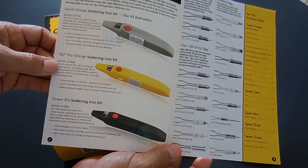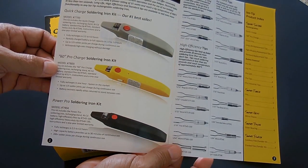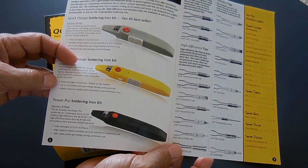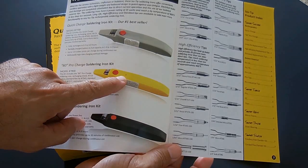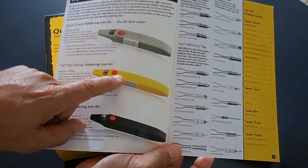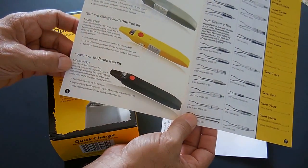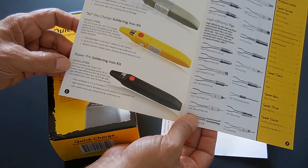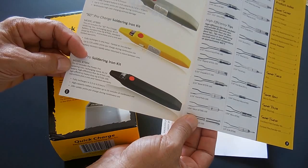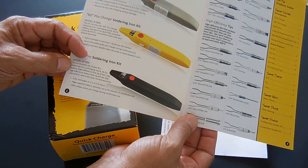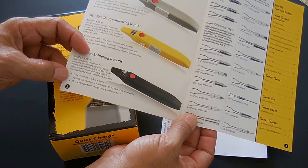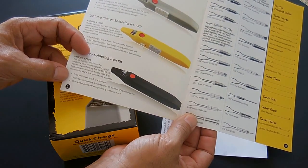The next one here is the model 7800. The only difference is this one charges faster. It charges in one hour, and it also includes this little indicator to let you know that the electronic soldering iron is charging. And the last one at the bottom is the Power Pro, and that one also charges the same as the one that I have, three and a half to four hours. It has a high capacity battery that provides up to 30 minutes of continuous use, and you can solder 200 plus solder joints per charge while using continuously.